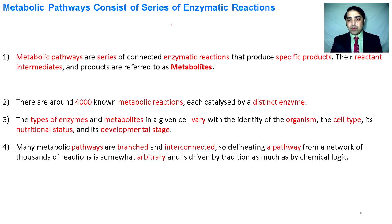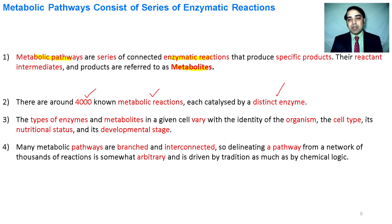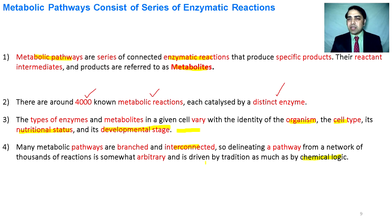Metabolic pathways consist of series of enzymatic reactions. All the reactions and products formed during metabolism are called metabolites. There are almost 4,000 metabolic reactions that have distinct enzymes. The types of enzymes and metabolites vary from cell to cell, from organism to organism, from nutritional status, developmental stage, and tissue type. Many metabolic pathways are branched and interconnected, so to study a single pathway we must follow a set of rules and chemical logic.